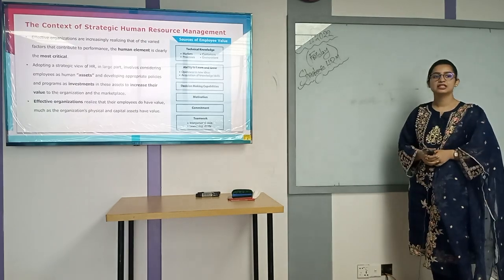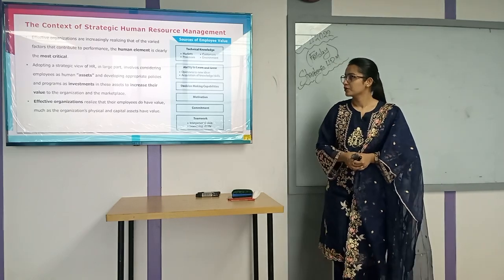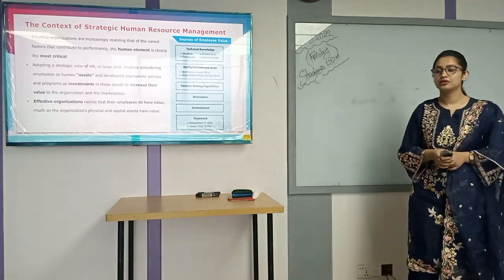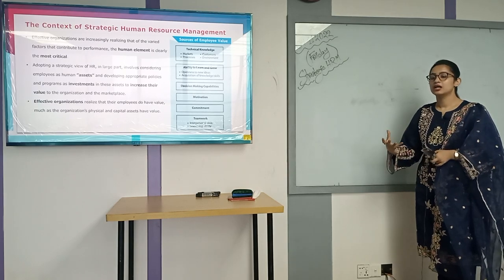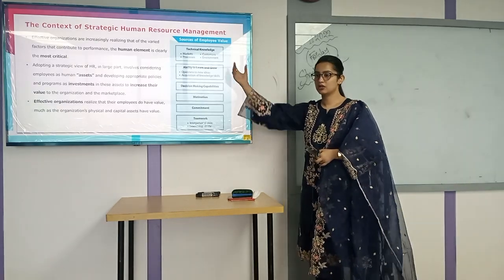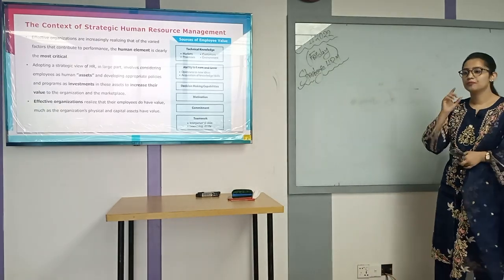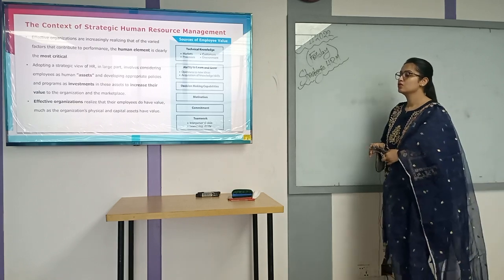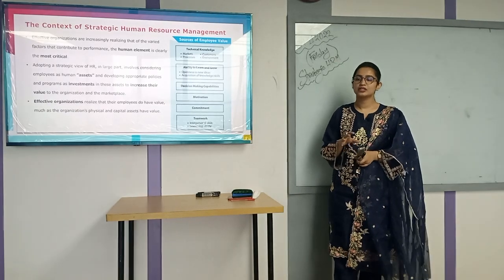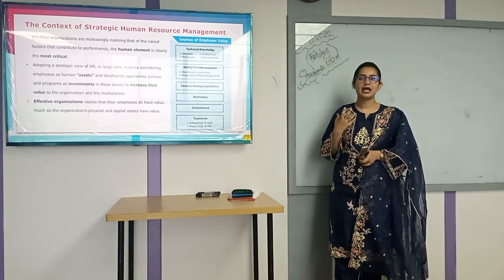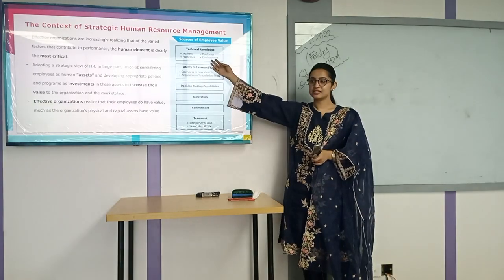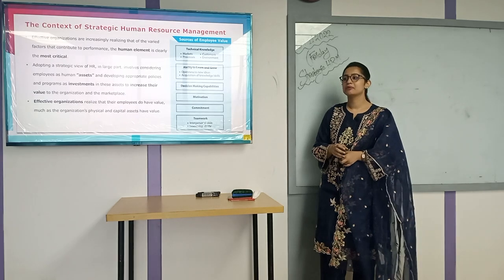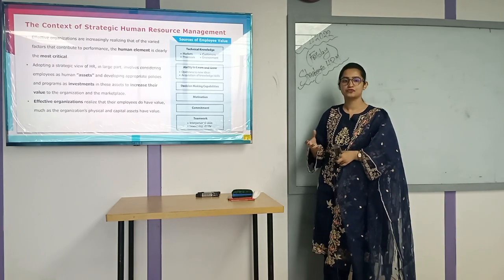Now we are discussing the context of strategic HRM — specifically sources of employee value. Where can we get our desired employees? The first source is technological knowledge. We live in a technologically advanced, globalized era, so every employee must know about technology. Technological knowledge includes knowledge of market, processes (software), customers, and environment. Depending on the environment, technology changes — Bangladesh uses semi-moderate technology while developed countries use advanced technology.